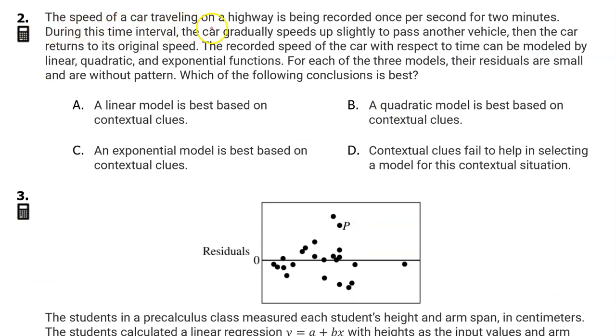Number 2. The speed of a car traveling on a highway is being recorded once per second for 2 minutes. During this time interval, the car gradually speeds up slightly to pass another vehicle. Then the car returns to its original speed. The recorded speed of the car with respect to time can be modeled by linear, quadratic, and exponential functions. For each of the three models, their residuals are small and are without pattern. Which of the following conclusions is best? Here are the relevant context clues. The car gradually speeds up, then returns to its original speed. So which model goes up, and then comes back down? Only a quadratic model does that, so the answer must be B.